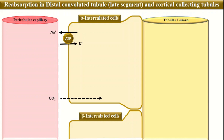The carbon dioxide that diffuses inside the intercalated cell combines with the water present here, and by the combination of these two, carbonic acid is formed. The carbonic acid then dissociates into hydrogen ions and bicarbonate. This process takes place in the presence of an enzyme called carbonic anhydrase.